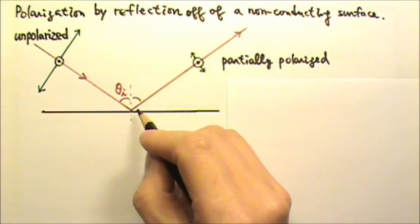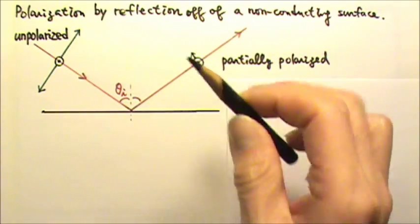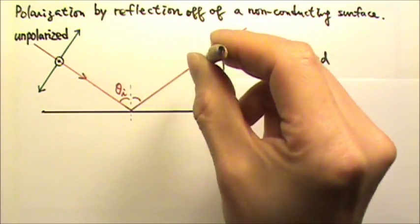This means the reflected light off of a horizontal surface has a strong horizontal electric field component.